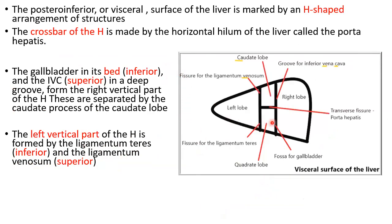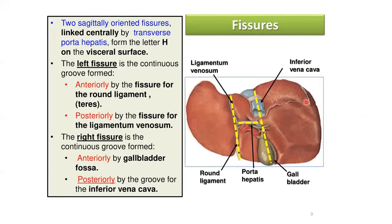The posterior inferior surface, also called the visceral surface, contains an H-shaped arrangement of structures. The crossbar of the H-shape is made by the horizontal hilum of the liver, called the porta hepatis. The gallbladder lies in the lower part and the IVC in the superior part, forming the right vertical part of the H-shape. The left vertical part is formed by the ligamentum teres inferiorly and the ligamentum venosum superiorly.